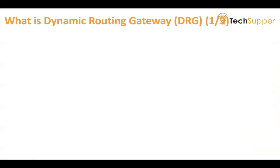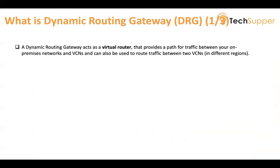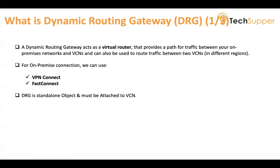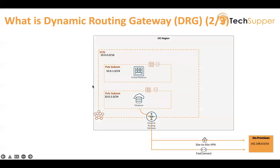Next is Dynamic Routing Gateway, which is very important. A Dynamic Routing Gateway acts as a virtual router that provides a path for traffic between your on-prem network and VCN, and can also be used to route traffic between two VCNs. For on-prem connections there are two ways to communicate: VPN Connect and FastConnect. DRG is a standalone object and must be attached to your VCN.